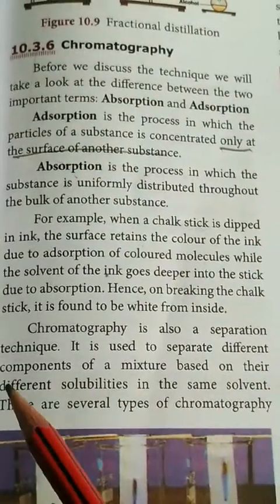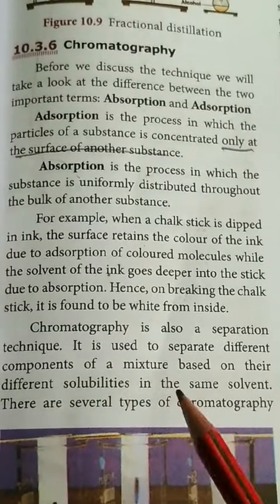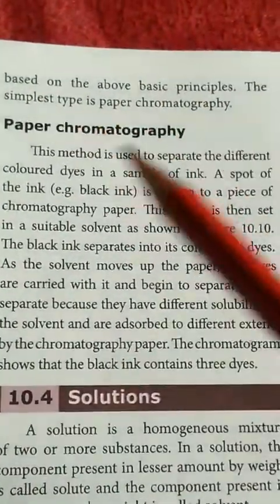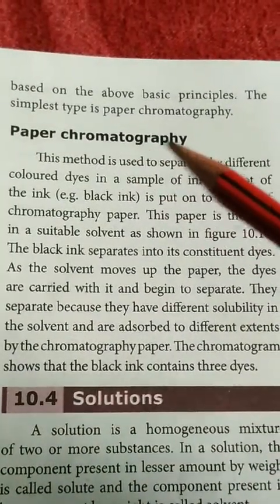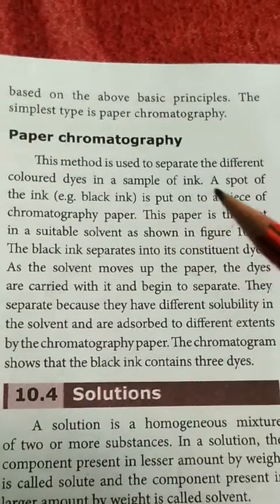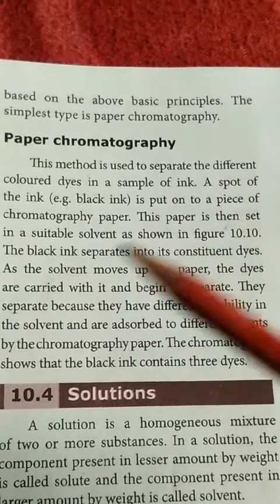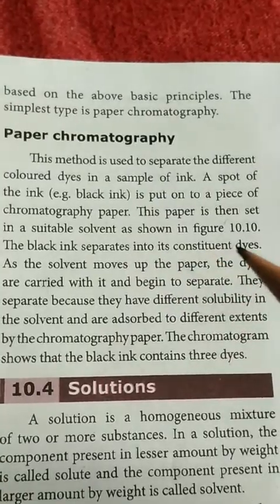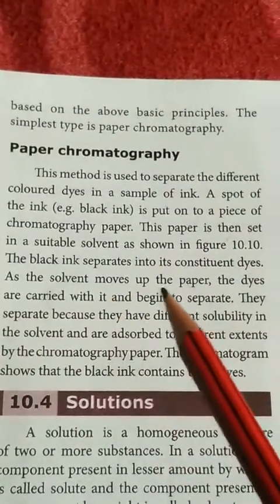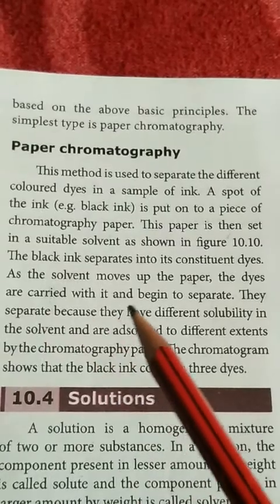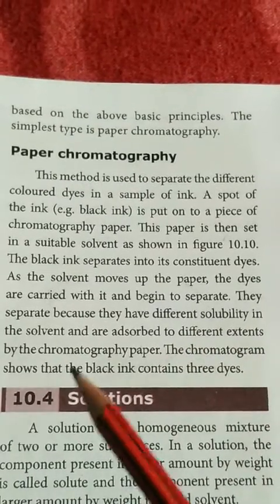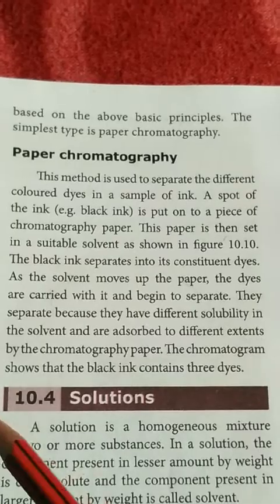Chromatography is also a separation technique. It is used to separate different components of a mixture based on their different solubilities in the same solvent. There are several types of chromatography. The simplest type, based on the basic principles, is paper chromatography. In this method, a spot of ink is put on a piece of chromatography paper, which is then dipped into a suitable solvent. The black ink separates into its constituent dyes as the solvent moves up the paper, since the dyes have different solubilities in the solvent and are adsorbed differently by the paper.